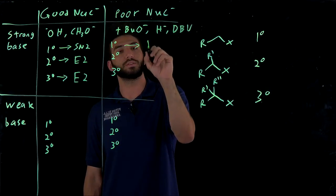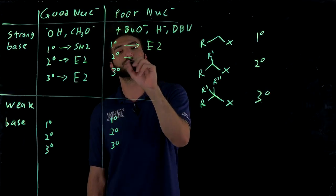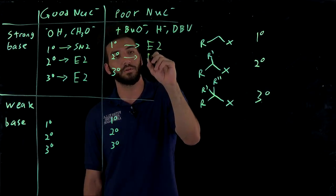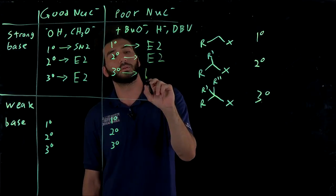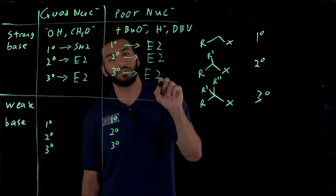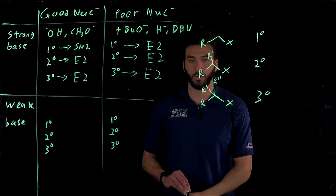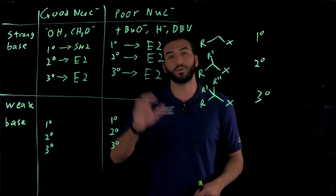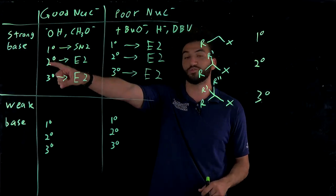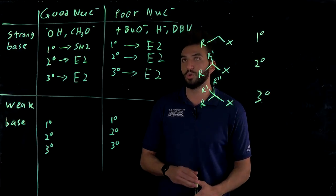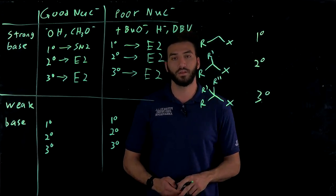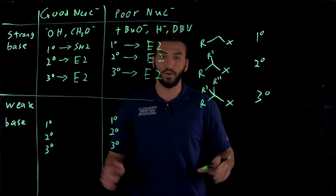Primary is going to go through E2. Secondary is also going to go through E2. And tertiary is going to go through, guess what, E2. So that's your easy section. If you can recognize a poor nucleophile that is a strong base, it's never going to go through a substitution reaction. And since we do have a strong base, it's going to go through E2 reactions always.